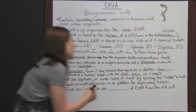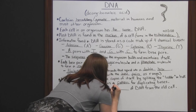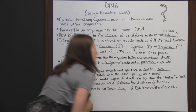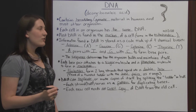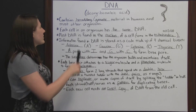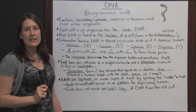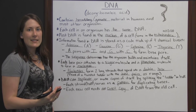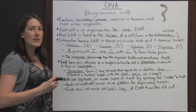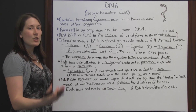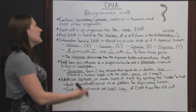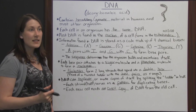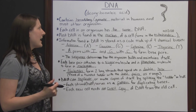Each new cell needs an exact copy of DNA from the old cell, because each cell in an organism has the exact same DNA. If the DNA is replicating itself, it needs to give an exact copy to a new cell so that the organism continues to have the same DNA throughout.